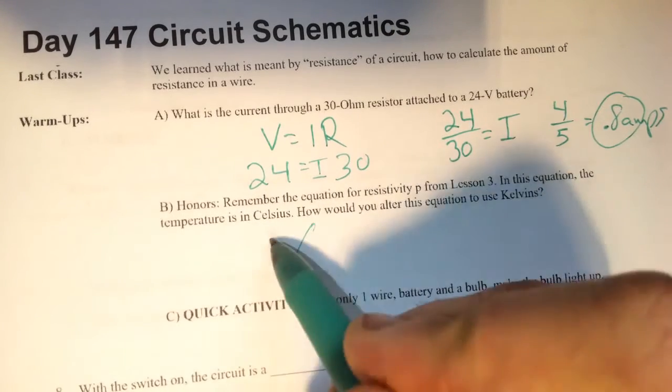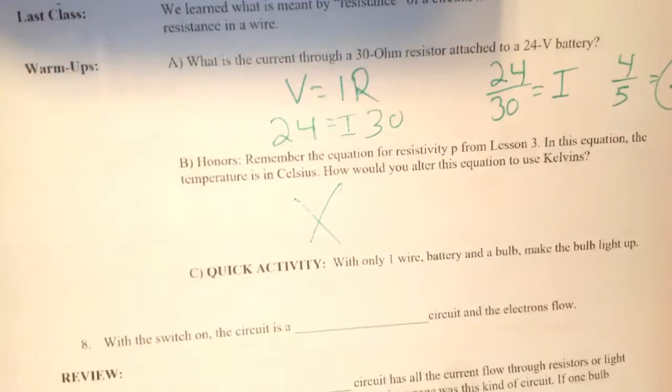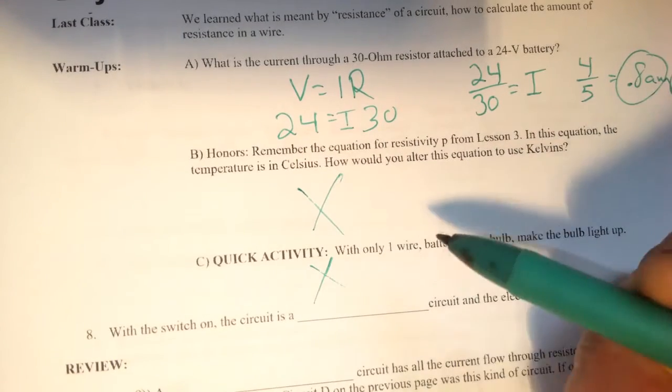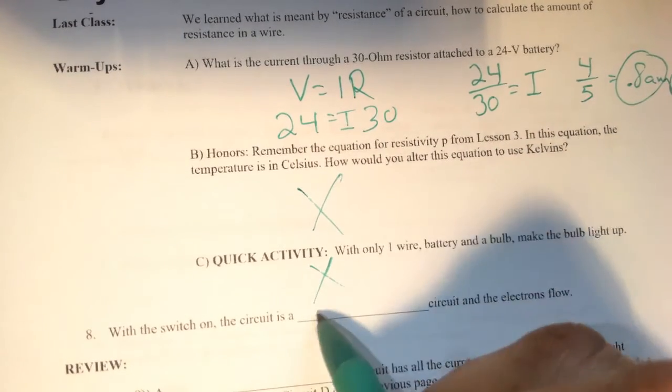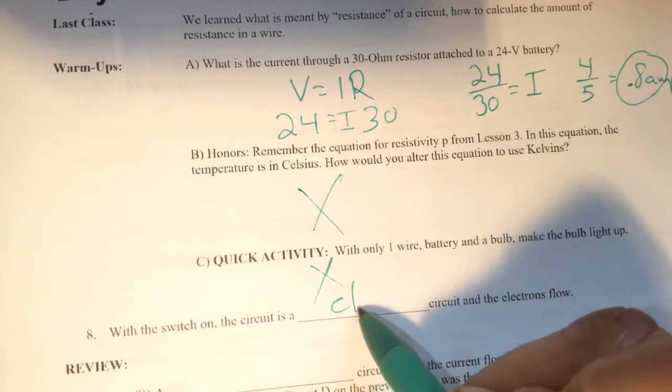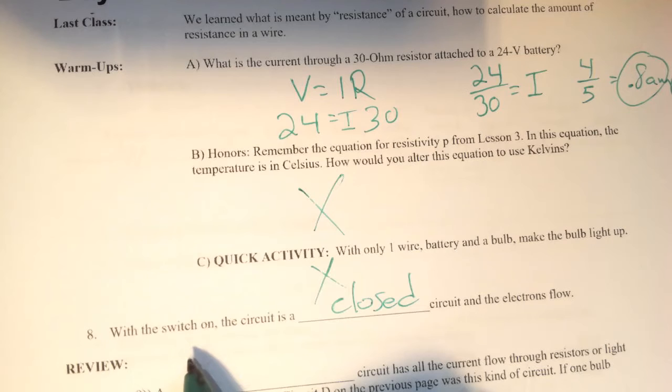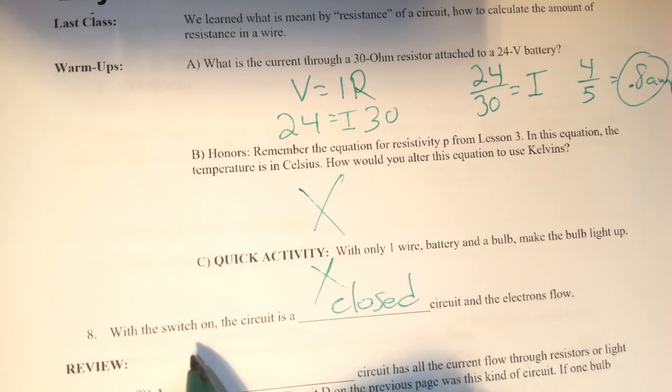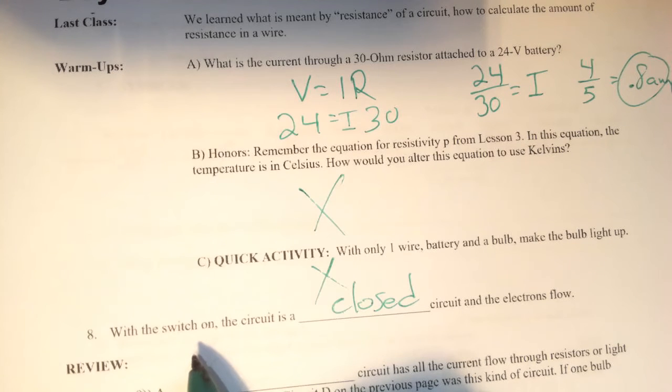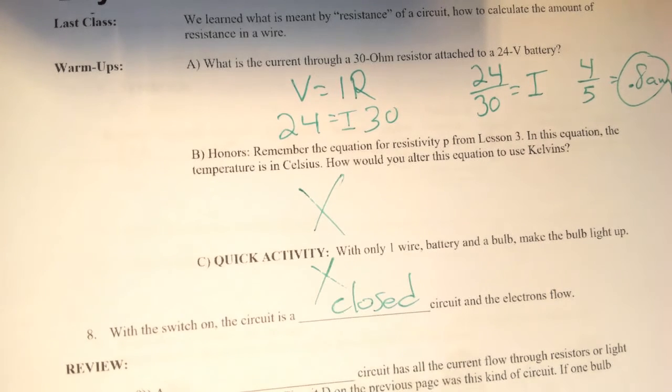We're going to skip number or letter B and skip letter C. With the switch on, the circuit is a closed circuit. When the switch is on, that means we've closed up any gaps and the charges can flow throughout. It's only when you have open air gaps in the wires where the circuit is turned off. So we call those open circuits.